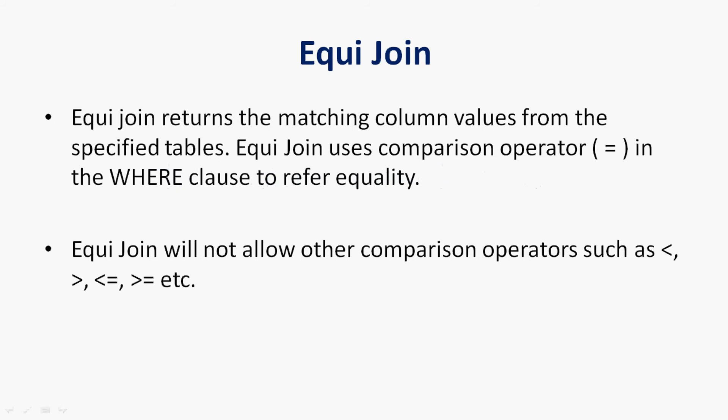Equi join returns the matching column values from the specified tables. Equi join uses the comparison operator equals in the WHERE clause to refer to equality. Equi join will not allow other comparison operators such as less than, greater than, less than or equals, greater than or equals, etc.